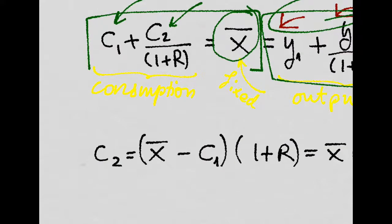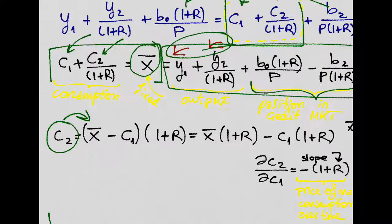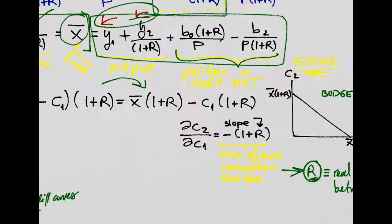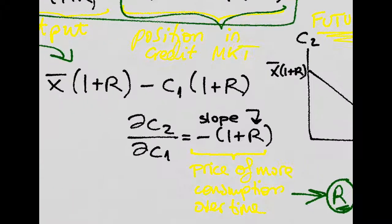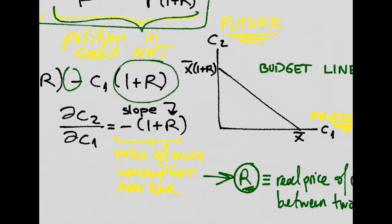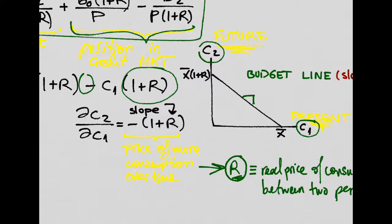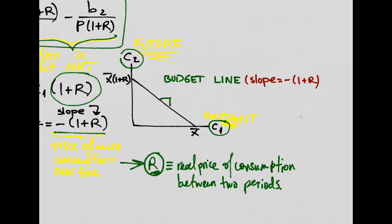And that is really important because we can write future consumption as a function of this, which will be equal to this, and the derivative of C2 with respect to C1 is just going to be minus 1 plus R. Remember the interest rate. So if we plot future consumption in terms of present consumption, the slope of this budget line is just going to be this, minus 1 plus R, the interest rate.